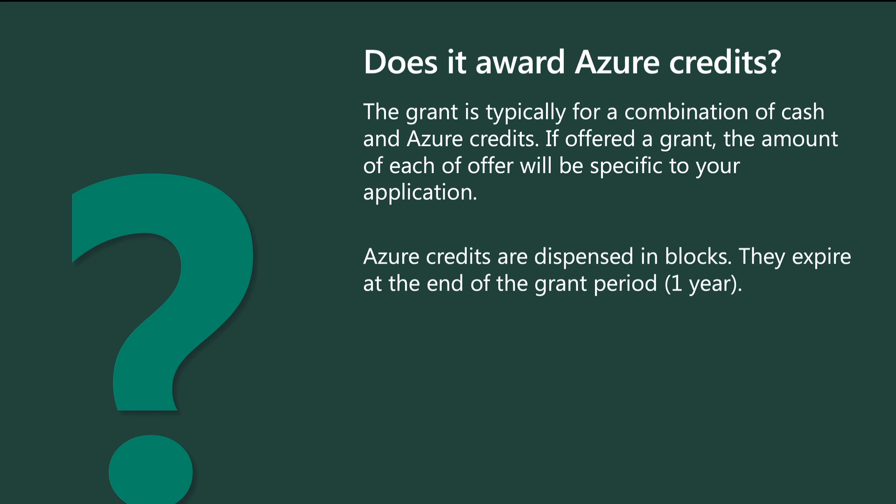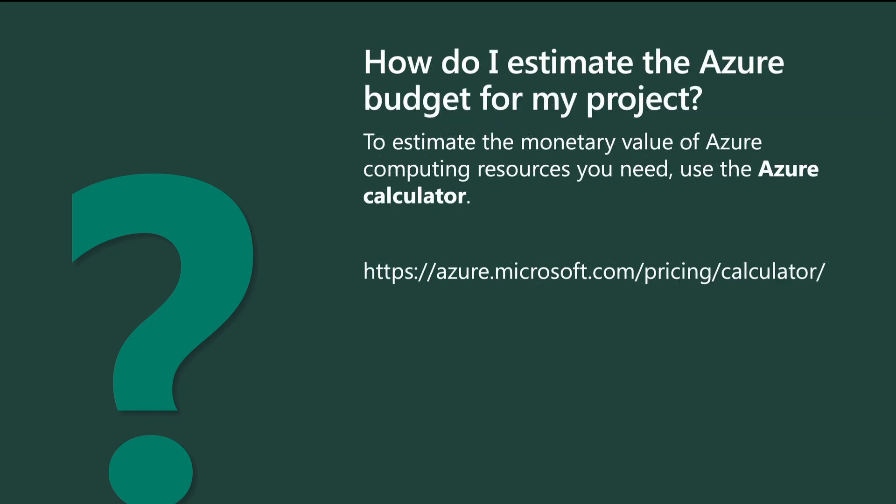Does this grant award Azure credits? The grant is typically for a combination of cash and Azure credits. If offered a grant, the amount of each offer will be specific to your application. Azure credits are dispensed in blocks and expire at the end of the grant period. How do I estimate the Azure budget for my project? To estimate the monetary value of Azure computing resources that you need, use the Azure calculator located at azure.microsoft.com/pricing/calculator.